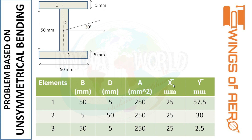Now we find x-bar for each element. The x-bar is the center of each element measured from the reference line. For element 1, the center is 50 divided by 2, which gives 25. Since this is a symmetric section, the line of symmetry lies along the y-axis, so the x-bar value remains the same (25) for all elements.